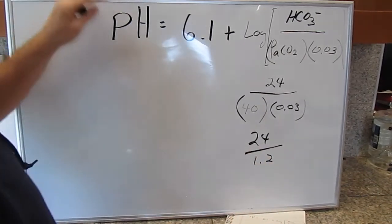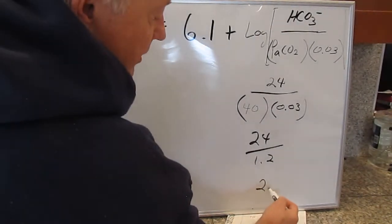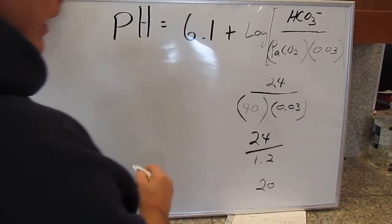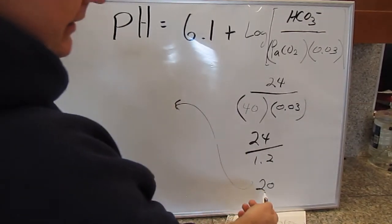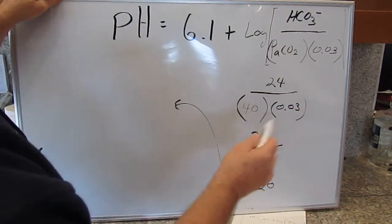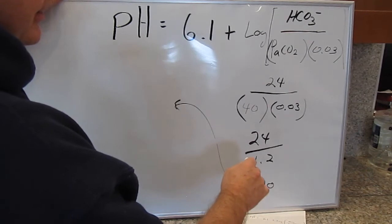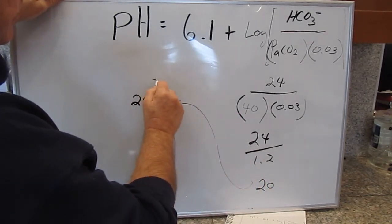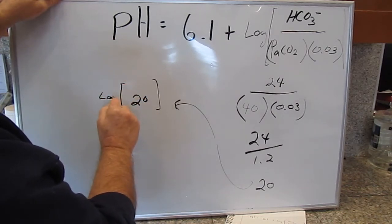If we divide 24 by 1.2 we come up with the number 20. Now this is the 20 to 1 ratio that we must maintain to maintain a normal pH. Take 20, and take the log of it.